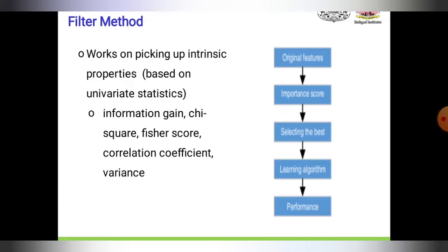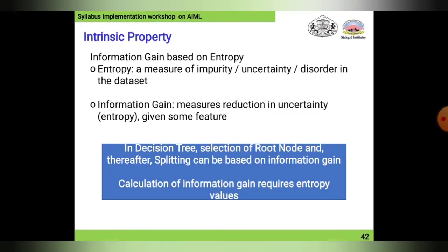The filter method is generally a selection procedure. The original features produce an importance score, which is used to select the best features. Those best features are passed to the learning algorithm, which is used for performance checking. This is how the filter method works.